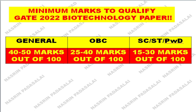Before writing this examination, share this video with your friends so they know the safe mark zones. If you are a general category candidate, try to attempt questions targeting 40 to 50 marks out of 100. If you are OBC, target between 25 to 40 marks — around 35 marks is a safe zone. If you are SC, ST, or a person with disability, targeting 15 to 30 marks is the safest range to qualify this GATE examination.